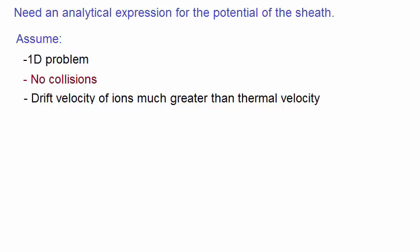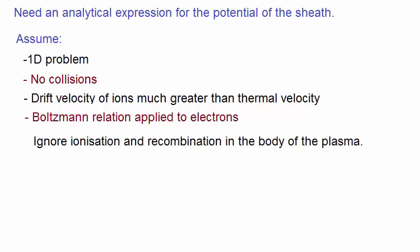Usually in the bulk of the plasma, where there is no sheath, it's the other way around. That is, the drift velocity of the ions is much less than their thermal speed. However, in the sheath, this is reversed. We also need to apply the Boltzmann relation to electrons. We'll also ignore any ionization or recombination reactions in the body of the plasma.